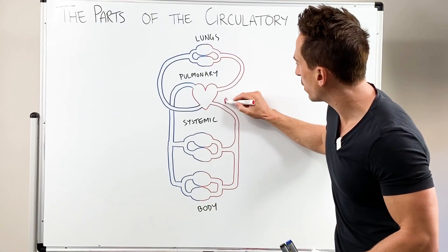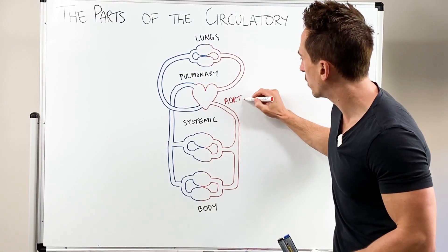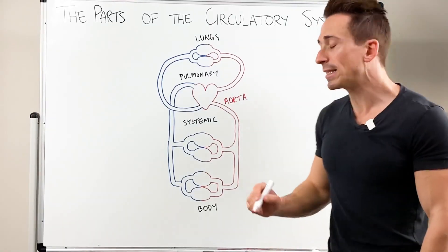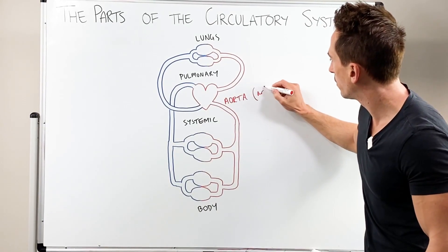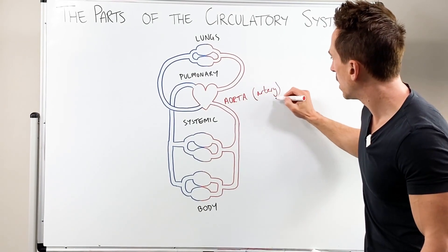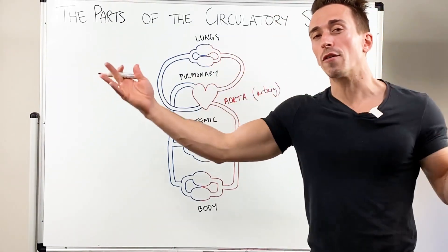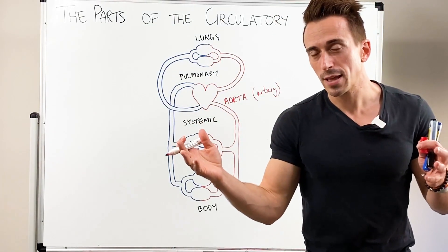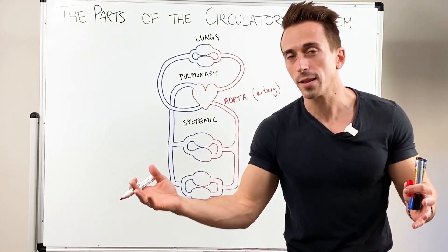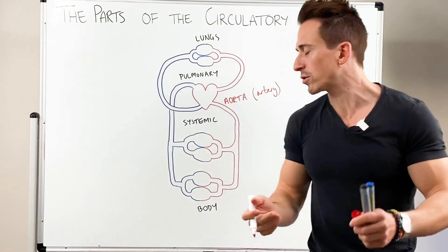We've got this big blood vessel here called the aorta. Now, the aorta is an artery and it's the artery that comes out of the heart that then branches off into smaller arteries that then branch off even further to deliver oxygen and nutrients to the tissues of our body.